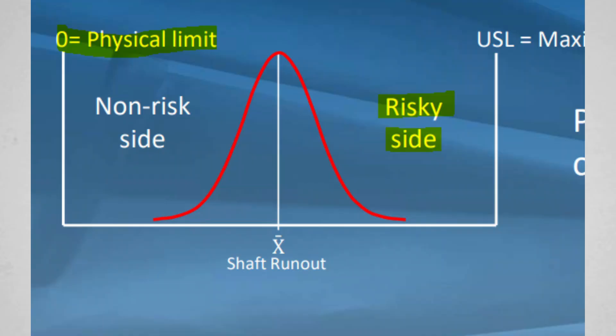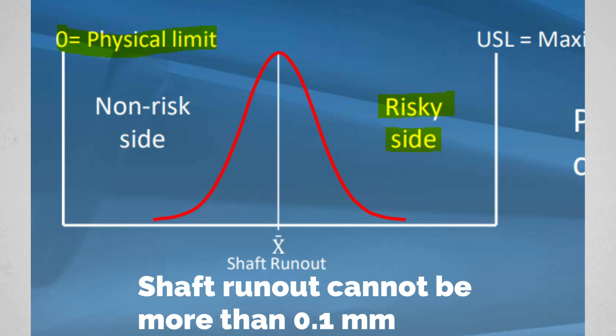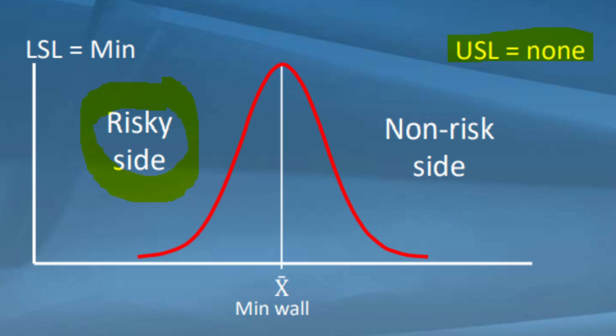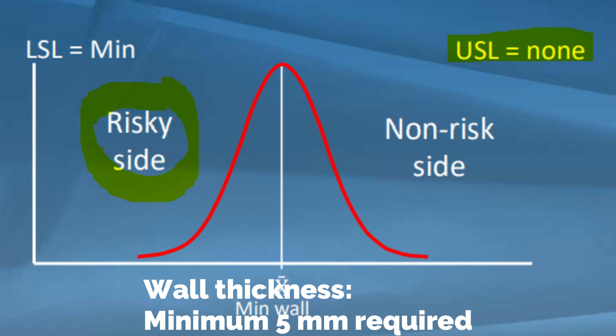Now as we move further to calculating CP and CPK — look at the screen where we give an example of unilateral tolerance. Assume we are talking about a shaft where the runout cannot be more than 0.1 mm. If it is on the upper specification limit side it is the risky side, because the maximum runout allowed is 0.1 mm. Whereas on the lower side there is no risk because if it is lower it is better. Similarly, for wall thickness where the minimum should be 5 mm, if it is on the lower side that is the risky side, but as long as it is more than 5 mm there is no issue.